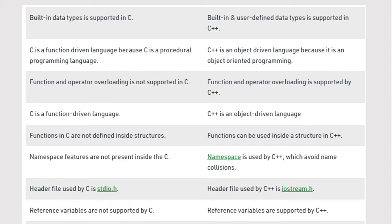Built-in data types are supported in C, while built-in and user-defined data types are supported in C++. C is a function-driven language because it is a procedural programming language; C++ is an object-driven language because it is object-oriented. Function and operator overloading is not supported in C but is supported in C++. Functions in C are not defined inside structures, whereas functions can be used inside a structure in C++.